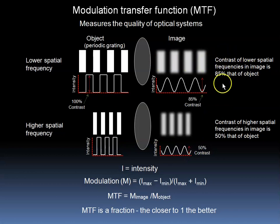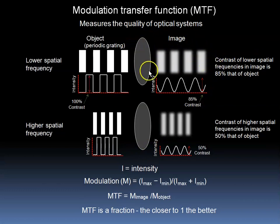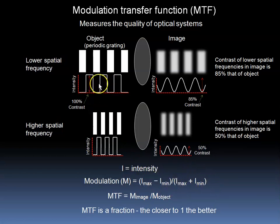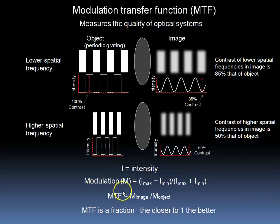Whereas for the lower spatial frequencies it's 85%. In this particular scheme, we show an optical system that gives a better image of the lower spatial frequency parts of the image than of the higher. Here, if I equals the intensity, then the modulation is equal to the difference from the minimum to the maximum intensity divided by the sum of the minimum and maximum intensity. We then take the modulation of the image and divide by the modulation of the object, and that gives us the modulation transfer function. This is a fraction — the closer to one, the better. In other words, we want the modulation of the image to be as close to that of the object as possible.